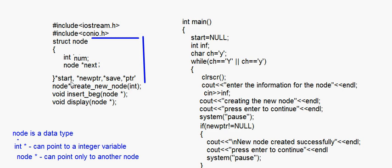For carrying out insertion in the linked list, we declare four pointers of node type outside the structure: 'node *start, *new_ptr, *save, *ptr'. Start will point to the starting node, new_ptr will be needed when we create a new node, and save and ptr will be used during insertion operations. This structure must be understood in order to proceed further.